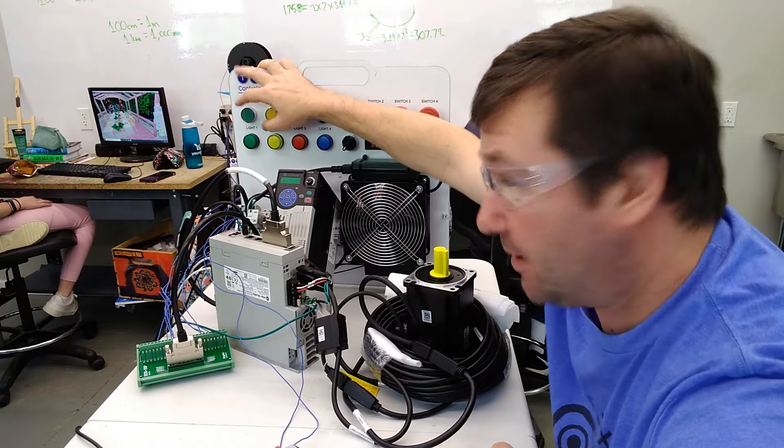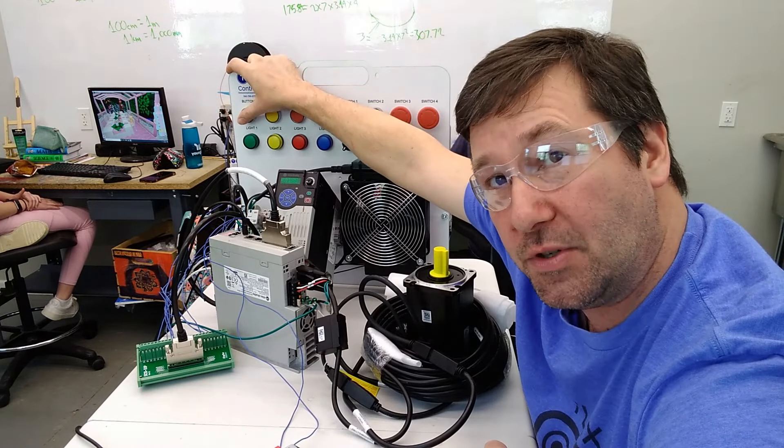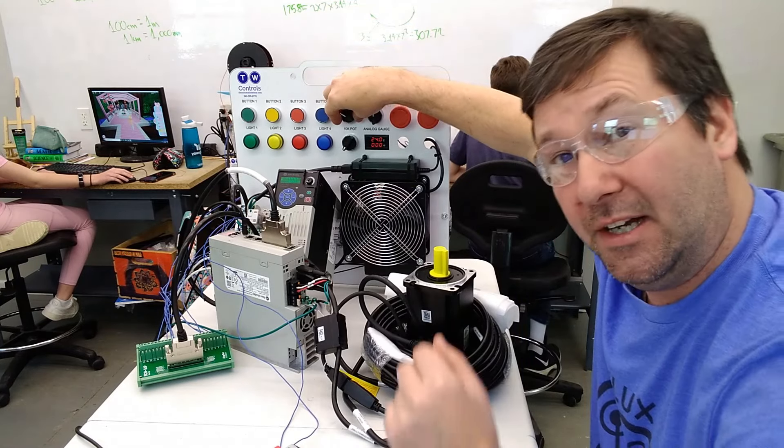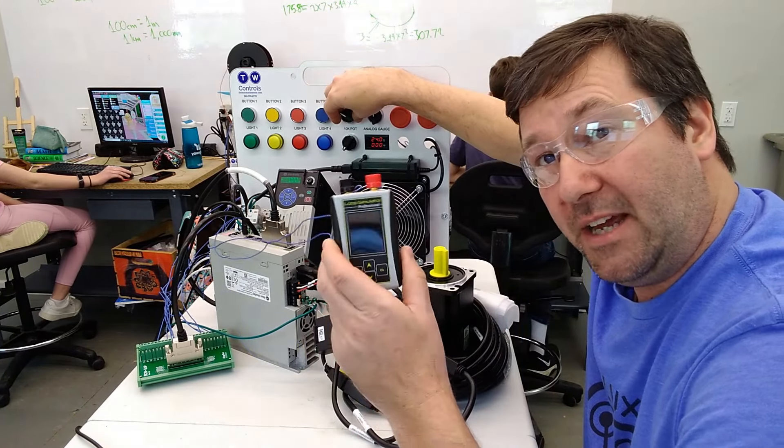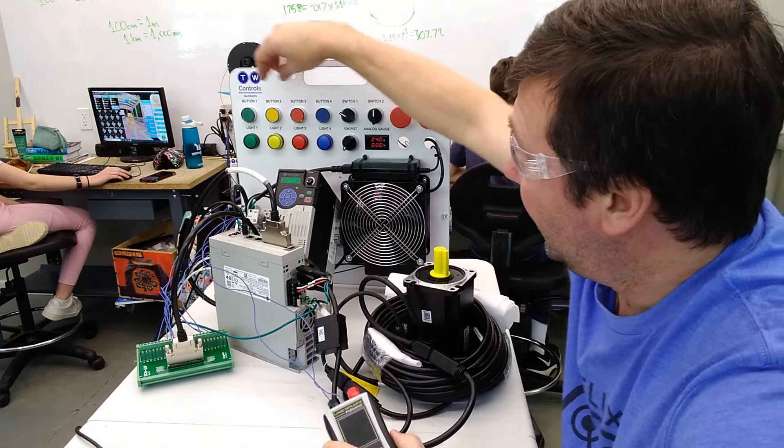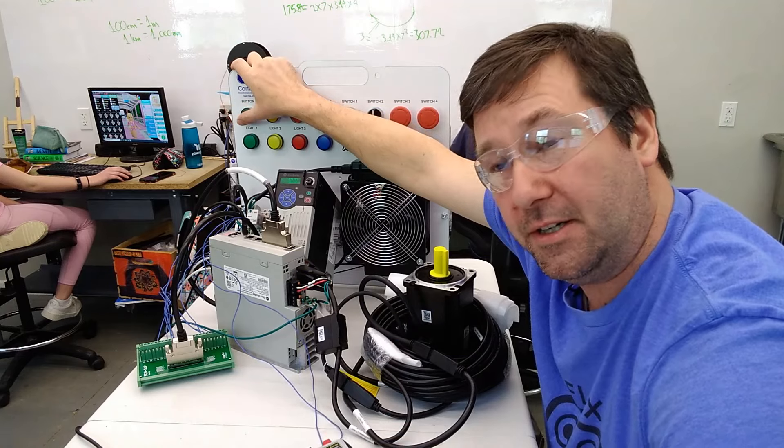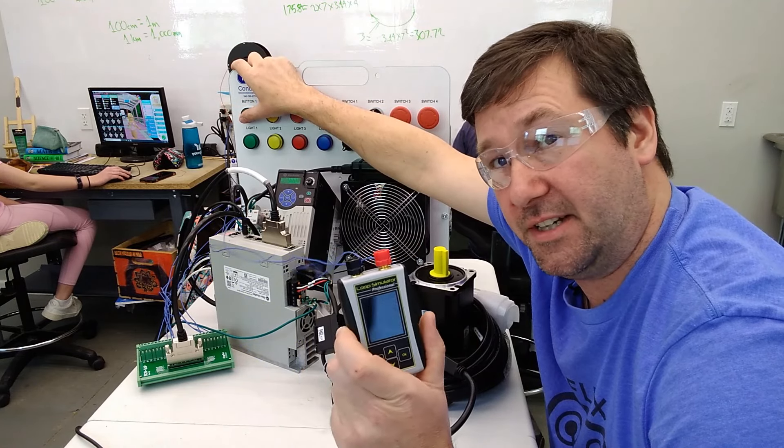For my specific application, I needed that reverse input. This one does an enable to enable the servo, it gives it an analog speed command which I'm going to use our analog simulator to do, and then when it needs to reverse, it has a reverse output to reverse whatever speed you're sending to the analog.